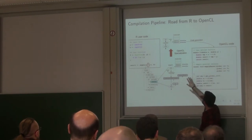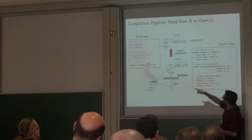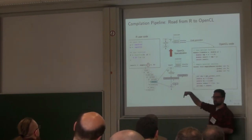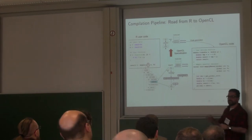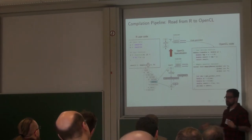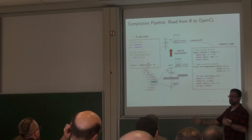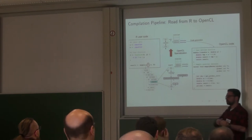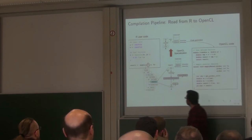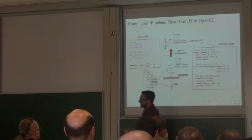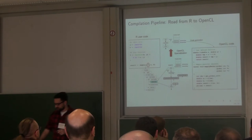By doing these simplifications, we get a very simple graph. Then we do a visitor — we traverse all the nodes in the IR and produce the OpenCL code. We use the driver to compile to binary code, and we keep it in a cache. So if you call the same function again, you just use the cached binary. That's the high-level overview of the compilation.